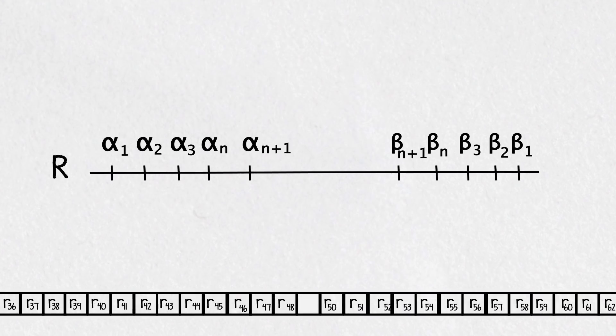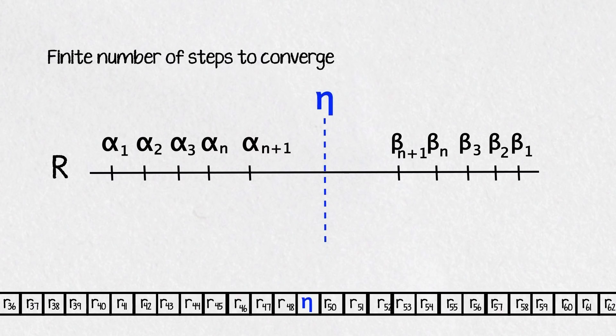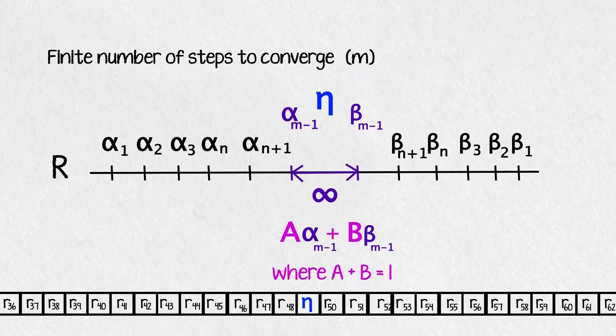Suppose this real number eta is on the list, which means it takes a finite number of steps to converge to it. We'll label this finite number of steps m. Now look at the alpha and beta terms just before eta, alpha m minus 1 and beta m minus 1. According to how the reals are defined there should be an infinite amount of real numbers between them like any weighted average between the two.